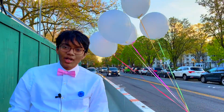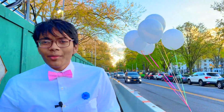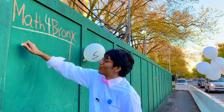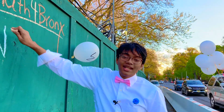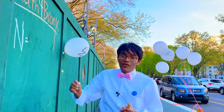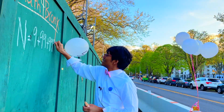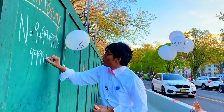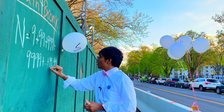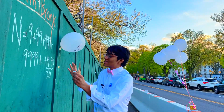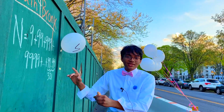Welcome back to Math for Broncos. Today we're going to be talking about arithmetic sums. Let's go ahead and start with the classic problem n. n is just a variable but it's equal to something far worse — it's equal to 9 repeated. We have to find the sum of the digits of n.